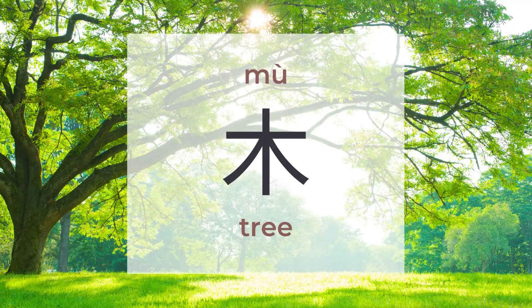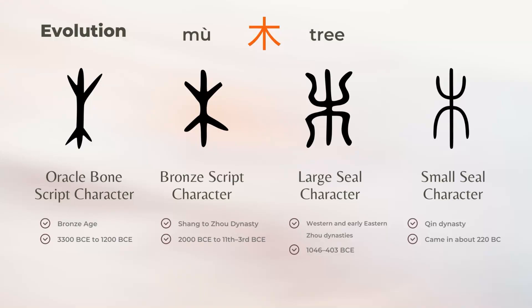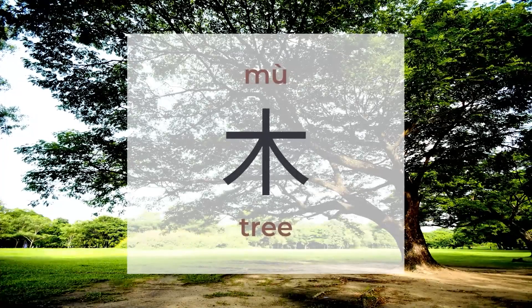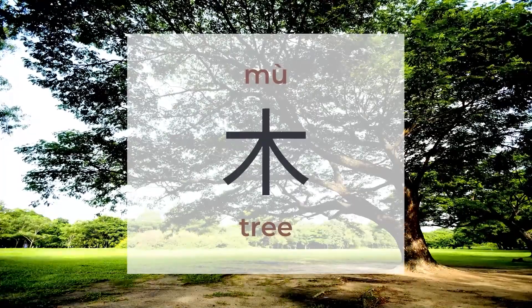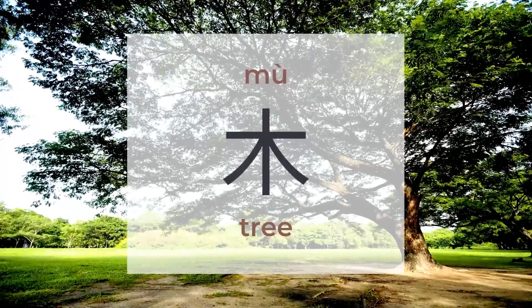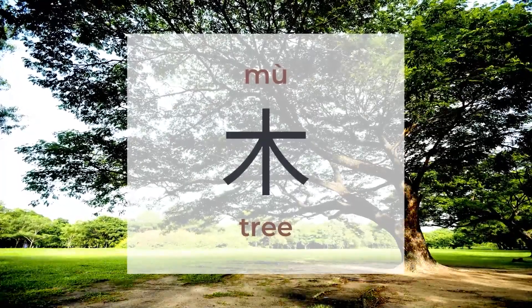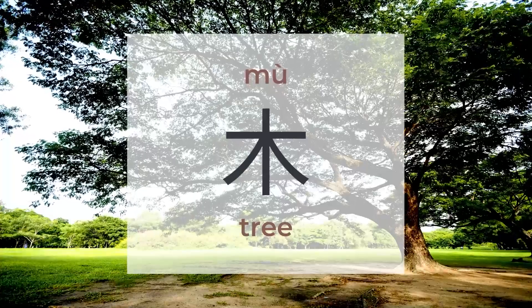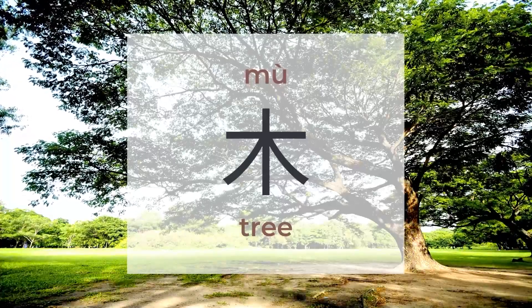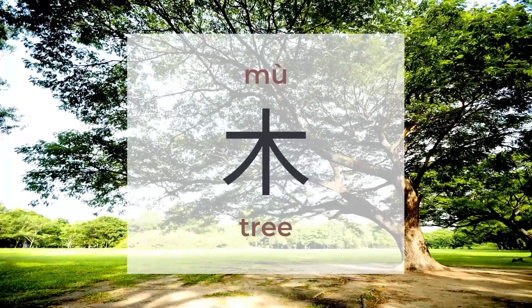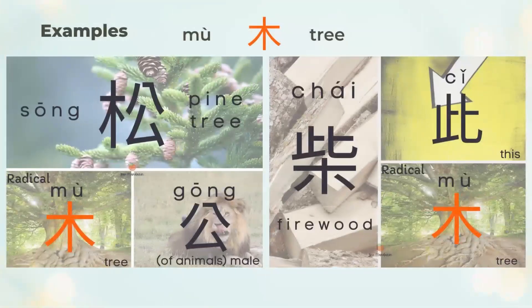木 means tree. There are around 1,369 characters to be found under 木. 木 is a pictogram with only one form. 木 mostly shows on the left side of characters and becomes skinnier.